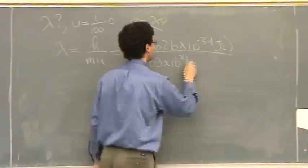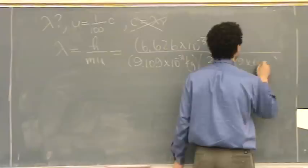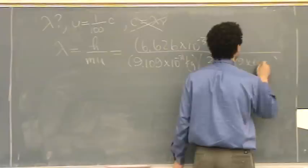And then velocity, it's C divided by a hundred. So C is on the back of the test also. 2.9979 times 10 to the eighth meters per second. Divide by a hundred. And there you go.